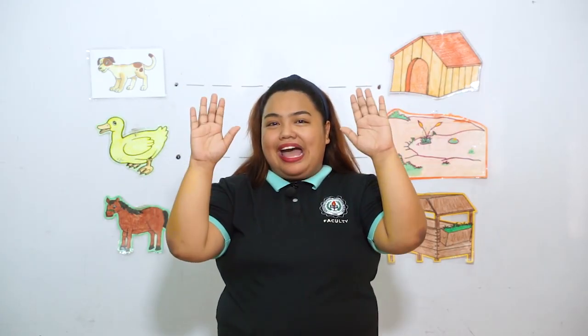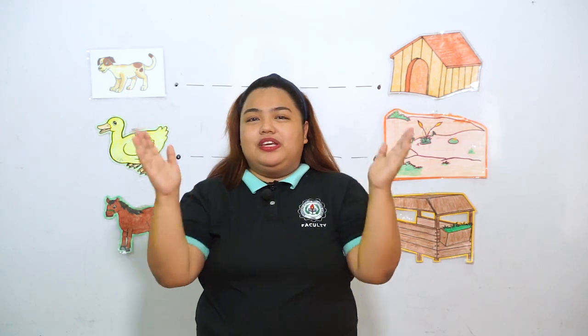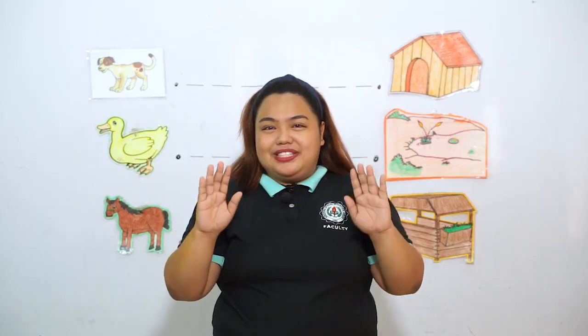Good morning, class. Are you ready to learn about our new lesson for today? But before that, we're going to sing — I have two hands, the left and the right. Hold them up high, clean and bright. Clap them softly, one, two, three. Clean little hands are good to see.